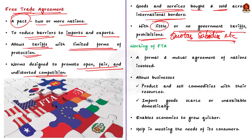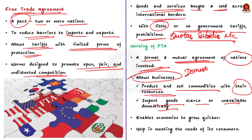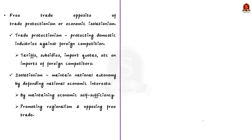Under a free trade policy, goods and services can be bought and sold across international borders with little or no government tariffs, quotas, subsidies, or prohibitions. In the modern world, free trade policy is often implemented by means of a formal mutual agreement. In principle, free trade on the international level has no difference from trade between neighbors, towns or states. It allows businesses in each country to focus on producing and selling commodities that make the most of their resources, while also supporting imports of goods that are scarce or unavailable domestically.